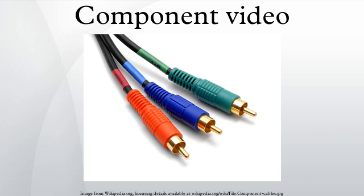Analog component video — reproducing a video signal on a display device — is a straightforward process complicated by the multitude of signal sources. DVD, VHS, computers, and video game consoles all store, process, and transmit video signals using different methods, and often each will provide more than one signal option. One way of maintaining signal clarity is by separating the components of a video signal so that they do not interfere with each other. A signal separated in this way is called component video.